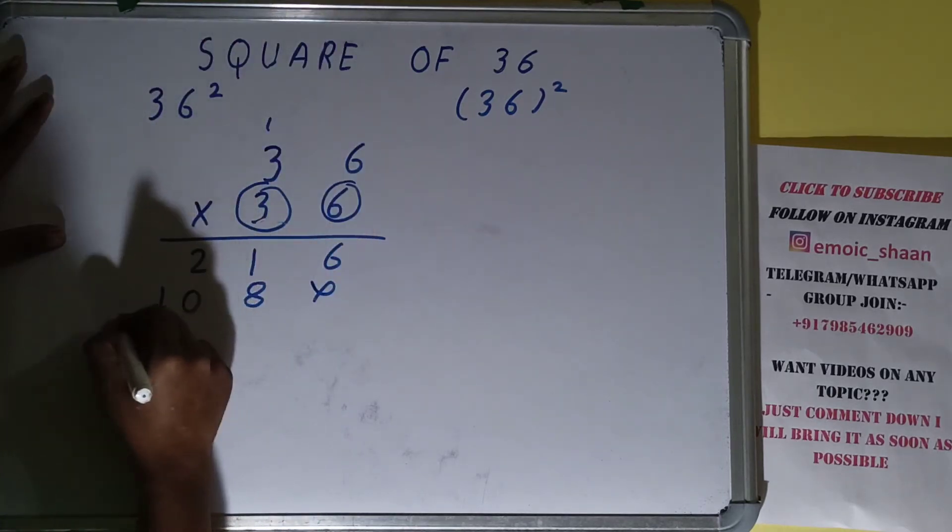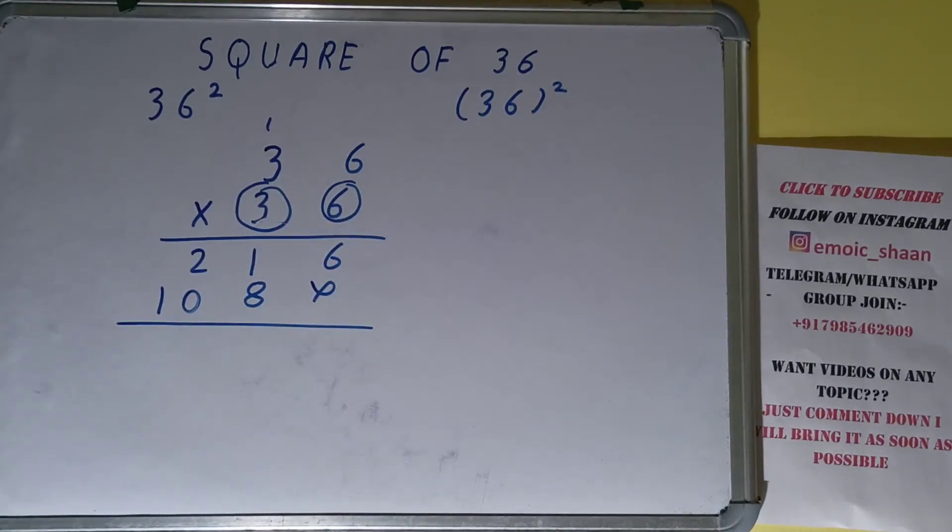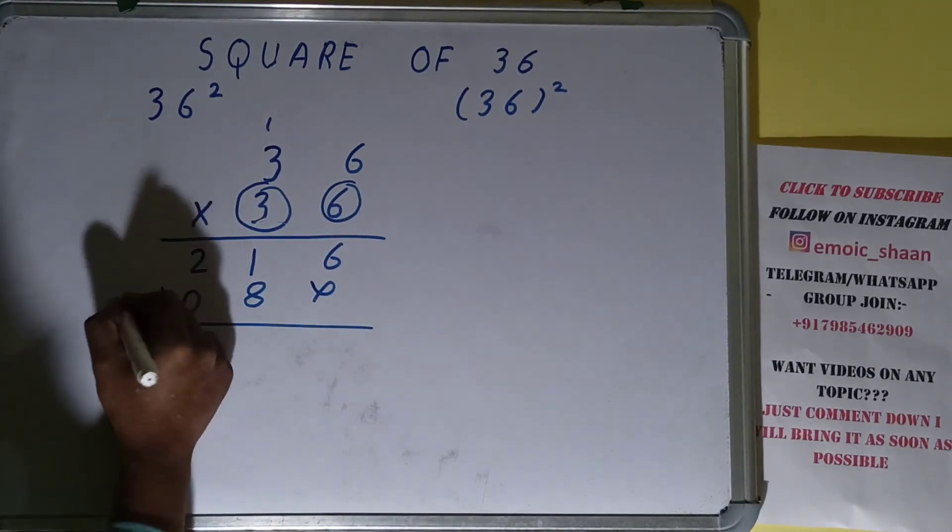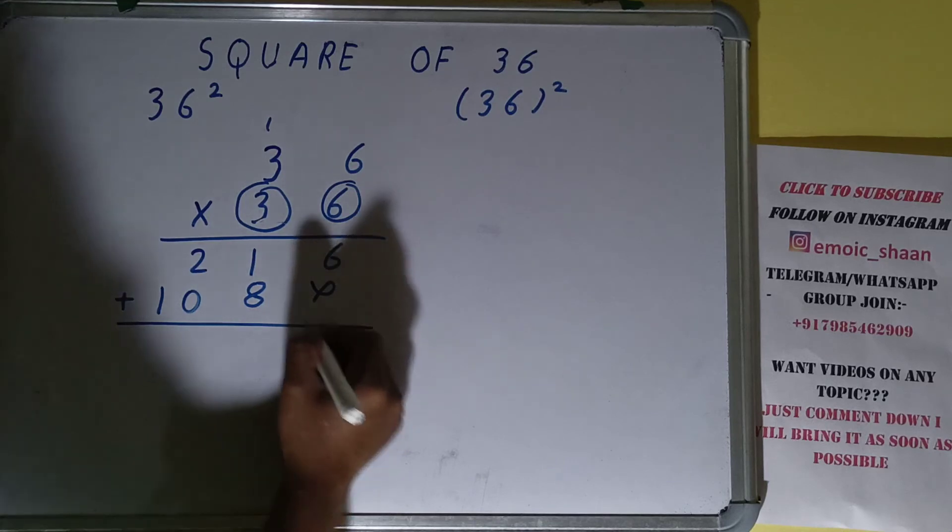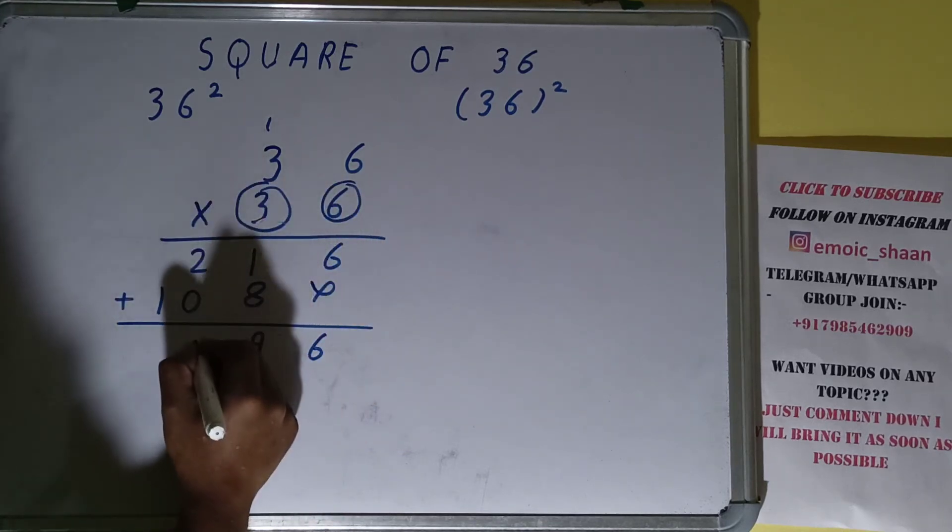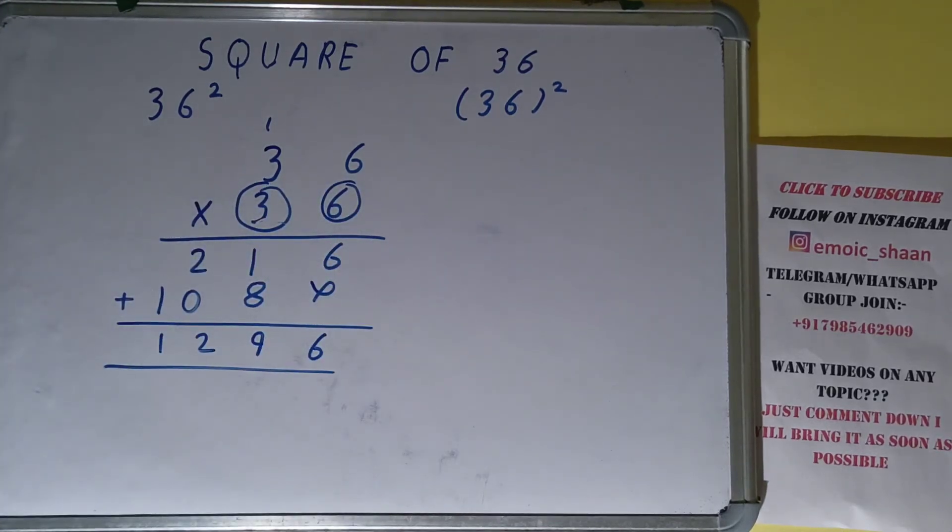Just add them all up. So this will be 6, this will be 9, this will be 2, this will be 1. So the answer will be 1296. So we can say that the square of the number 36 is 1296.